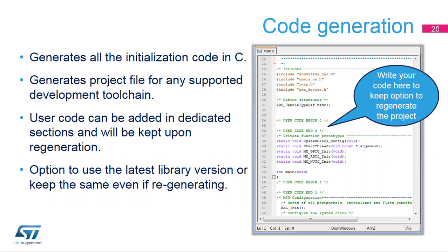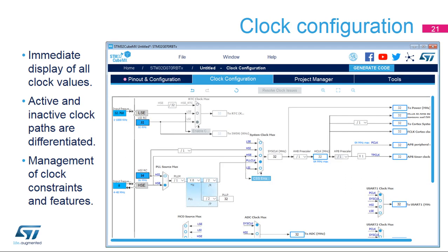First, check the settings in the project menu of the main window. One of the several supported development tools can be selected to take over the generated project, including tool chains from KEIL, IAR, and Atalic. User code must be kept between the constraints of the user code comment blocks in order for the initialization settings to be modified using STM32CubeMX without affecting the custom code. The Clock Configuration tab provides a schematic overview of the clock paths, along with all clock sources, dividers, and multipliers.